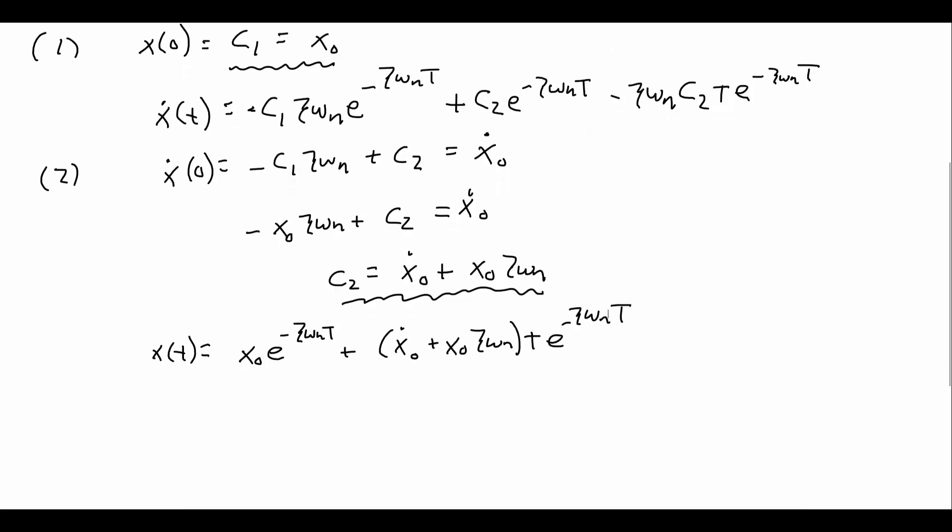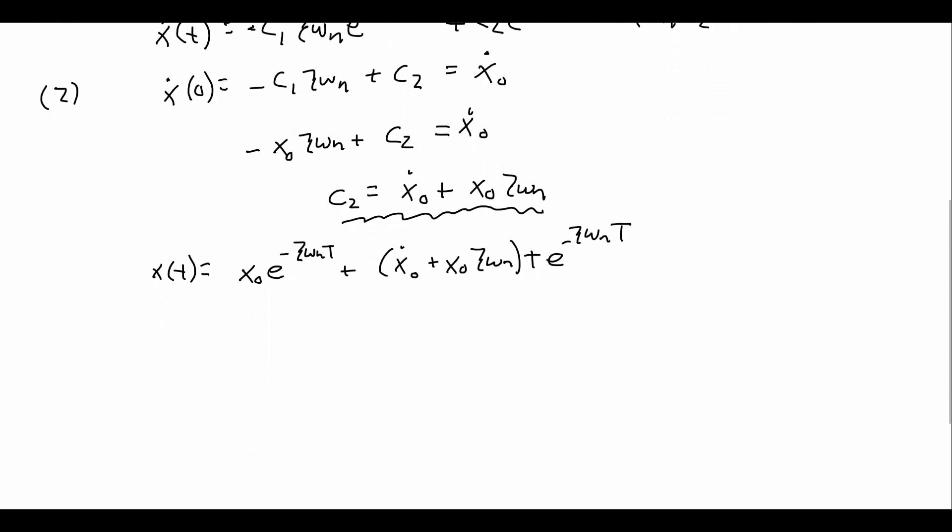And we can simplify this a little bit, since they both have that exponential term. I'm going to take that to the outside. So we'll be left with x₀ + ẋ₀ + x₀ζωₙ times t. And on the outside, I can put the exponential term. And we get exactly what we had on the slide here. This was derived using what we know from solving second-order ODEs.